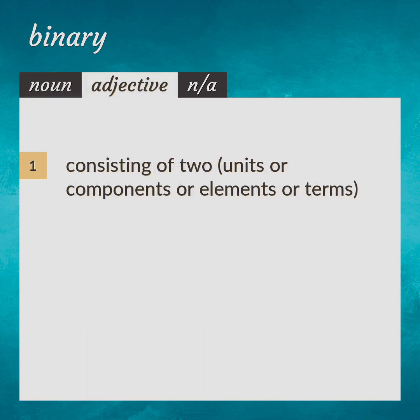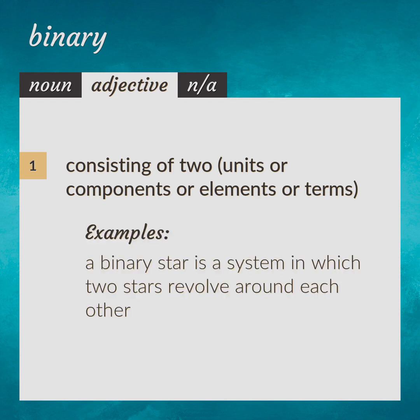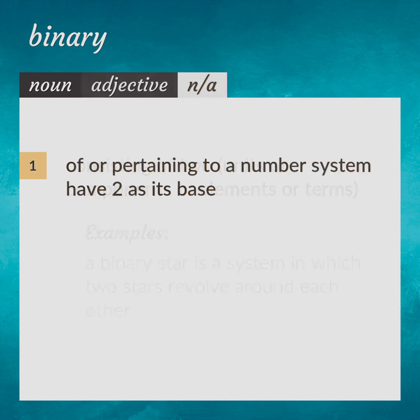Consisting of two units or components or elements or terms. A binary star is a system in which two stars revolve around each other. Ever pertaining to a number system have two as its base. A binary digit.